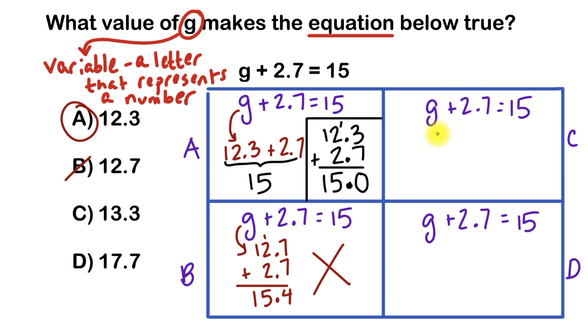Let's do the same thing here. For choice C, we're saying that G would equal 13.3. All right, so we've got 13.3. I'm going to put that here for G. 13.3. And when I put 2.7 under it, I'll make sure I use a decimal point here to line everything up.